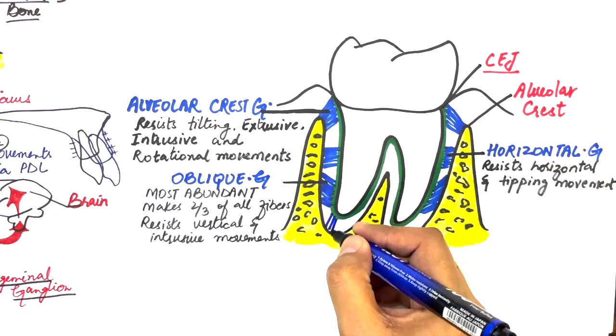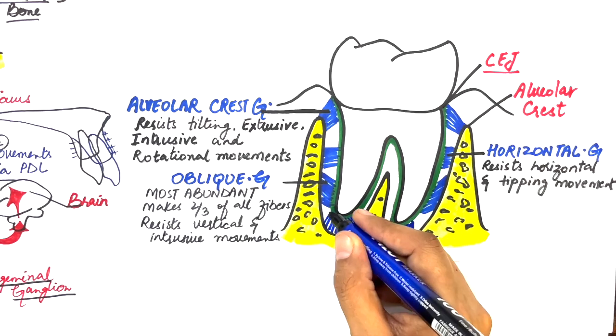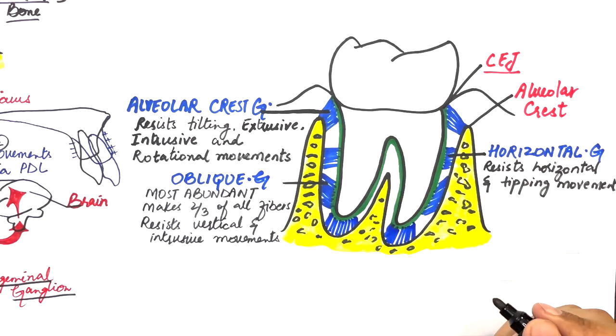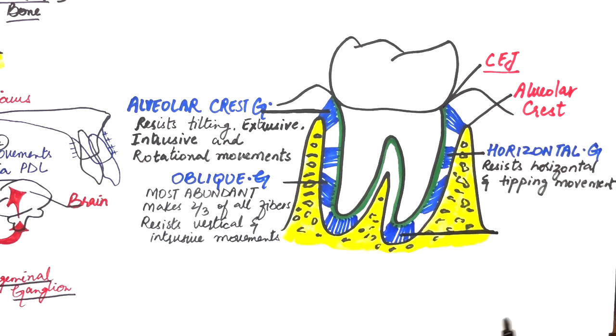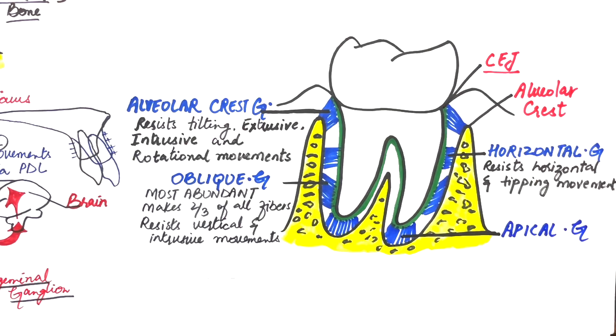The apical group radiates from the root apex up to the bone. These fibers resist forces of luxation and tipping movements.